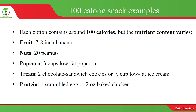3 cups of low-fat popcorn also contributes 100 calories. Treats, for example 2 chocolate sandwich cookies or a half cup of low-fat ice cream, also contribute 100 calories. For proteins, 1 scrambled egg or 2 ounces of baked chicken also contributes 100 calories.